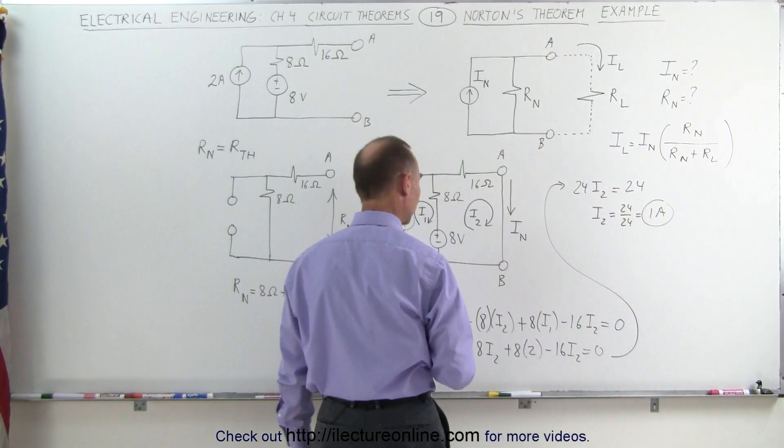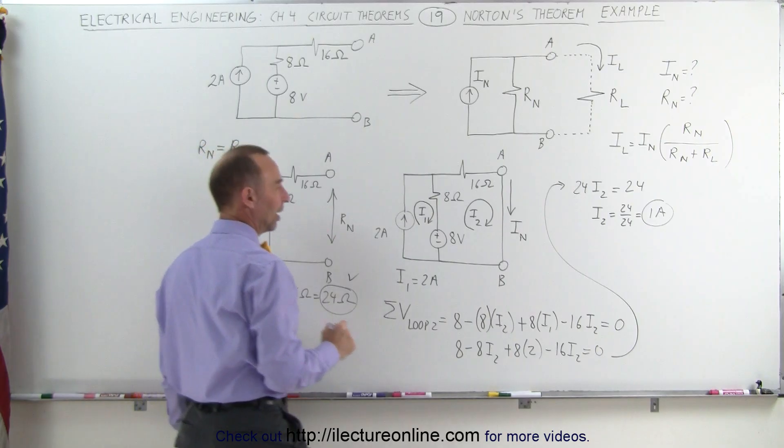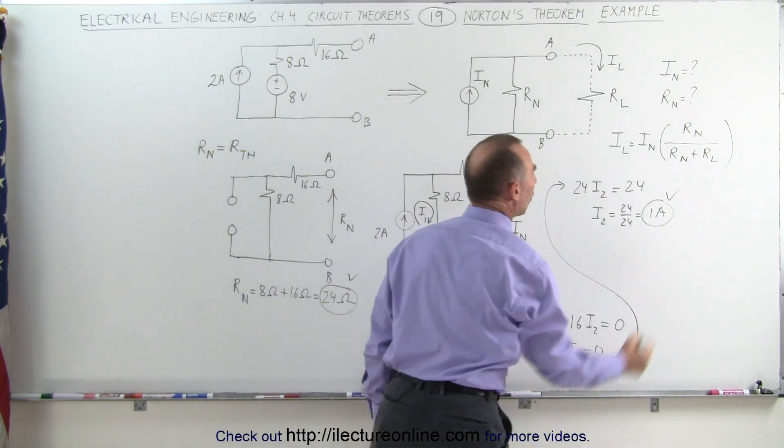So now we have Norton's resistance, which is right here, 24 ohms, and Norton's current, which is 1 amp.